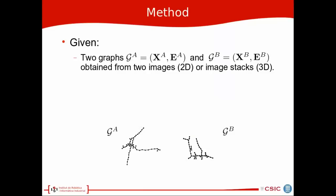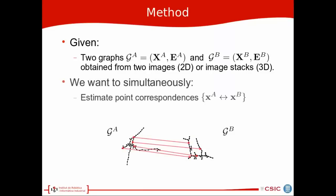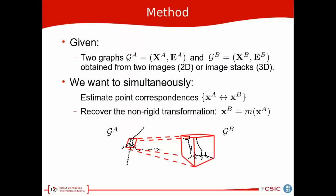So given these two graphs, we want to simultaneously estimate point correspondences and recover the non-rigid transformation between them. We are going to do that using non-linear registration using Gaussian Processes.